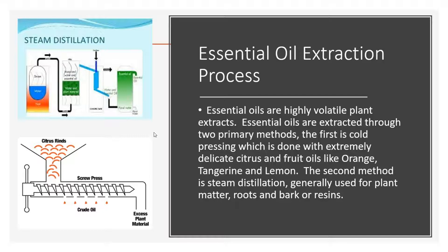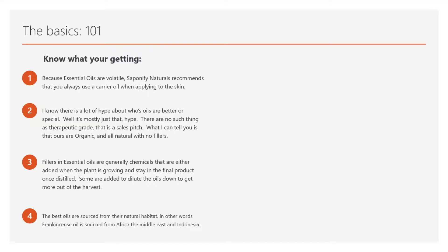Those are the basic processes for the extraction methods for both types, and those are the primary types used. Knowing what you're getting — having an idea of exactly what it is that you're going to be purchasing with essential oils — is important. It varies because everybody has their own thought processes on essential oils, and every company thinks that their essential oils are better than everybody else's.